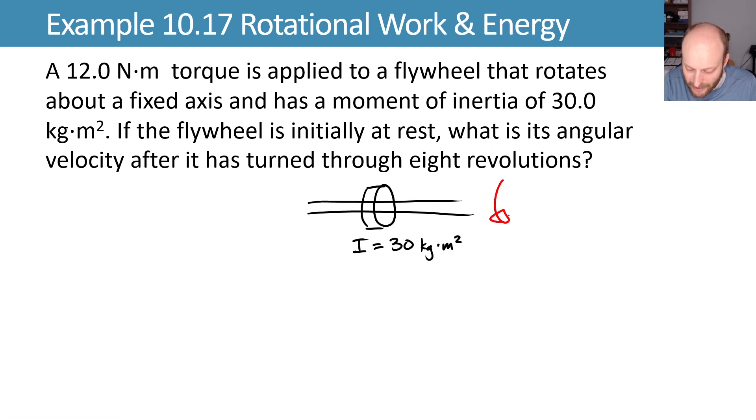We start from rest and we apply some torque of 12 newton meters to spin this through eight revolutions until we get up to speed. So our angular displacement is going to be eight revolutions, which I'll convert to radians using two pi radians is one revolution. This should cancel out the revolutions and leave me with 16 pi radians worth of angular displacement.